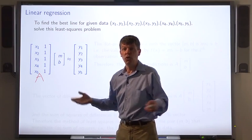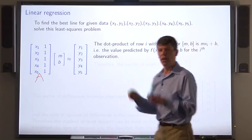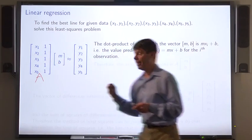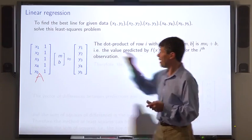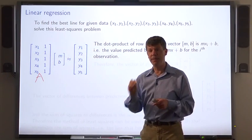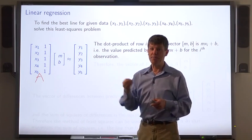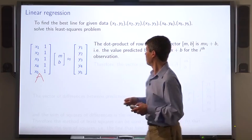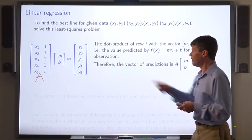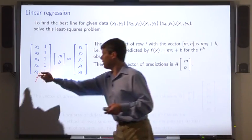What does this have to do with fitting a line to data? Note that the dot product of row i of the matrix A with the vector mb is m times xi plus b, which is the prediction of the line model for that particular datum. So the vector of predictions is this matrix A times the vector mb. It's this product.